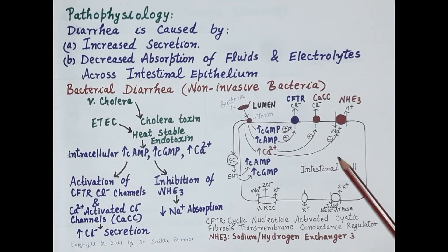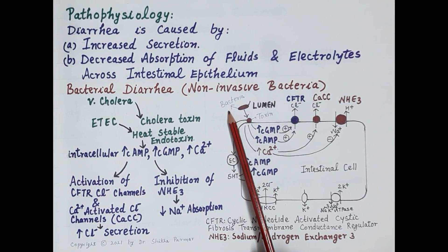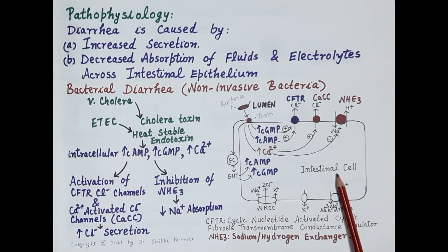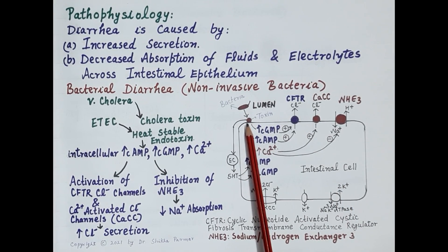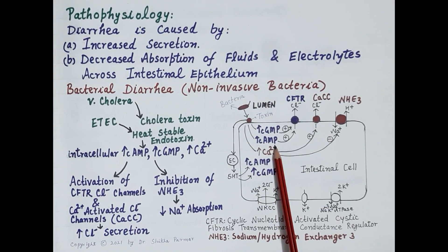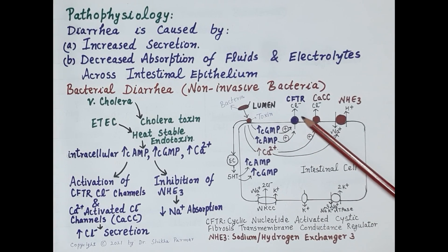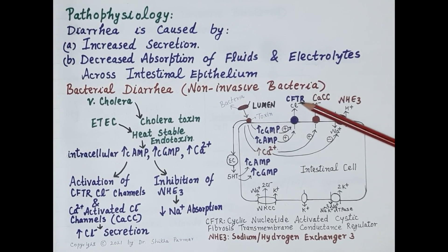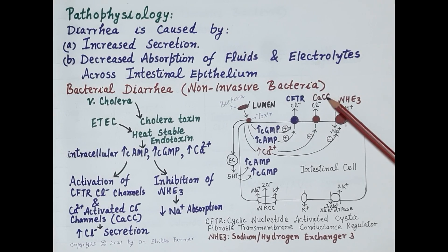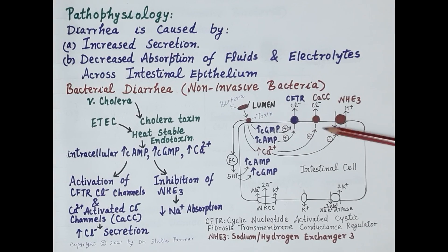ETEC produces a heat-stable endotoxin while Vibrio cholerae produces cholera toxin; these produce mostly mild, self-limiting, loose watery diarrhea. As shown in the diagram, toxins released from non-invasive bacteria increase intracellular levels of cyclic AMP, cyclic GMP, and calcium. Increased cyclic AMP and cyclic GMP activate CFTR chloride channels, which increases chloride secretion into the intestinal lumen. Increased calcium further activates calcium-activated chloride channels, further increasing chloride secretion.